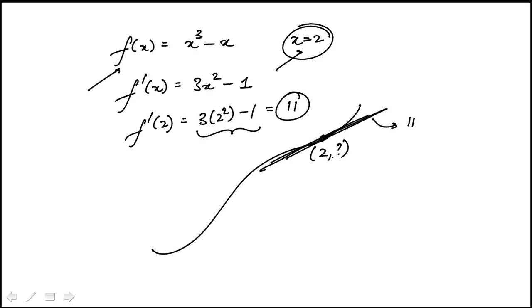And I can find the other point, which will fall on the function, which is when x equal to 2, what is the value of the function? So f of 2 is 2 cubed minus 2, which is 6. So the coordinates of that point is 2, 6.